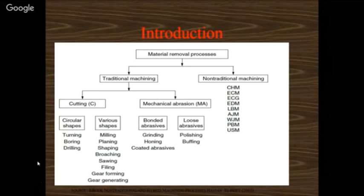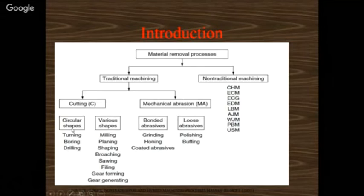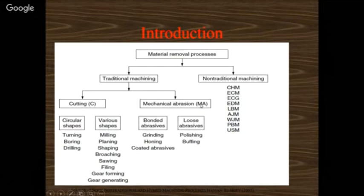Looking at the flow chart for material removal processes, there are two kinds: traditional and non-traditional machining. Traditional includes cutting and mechanical abrasion. Cutting expands to turning, boring, and drilling for circular shapes, and milling, planing, shaping, broaching, gear forming, and gear generating for various shapes. Mechanical abrasion has bonded abrasives and loose abrasives.